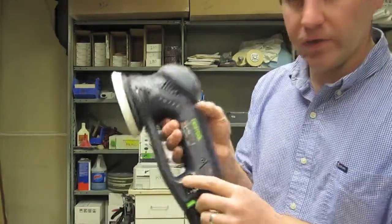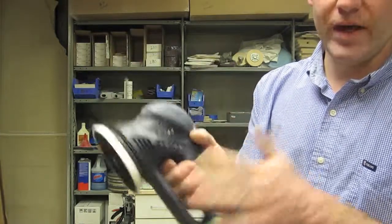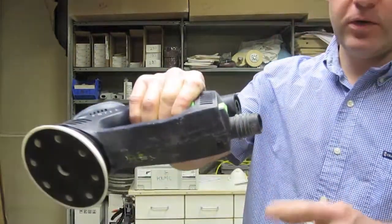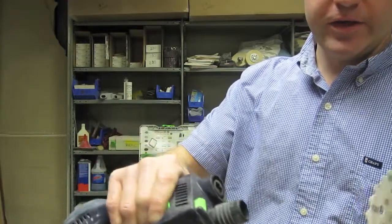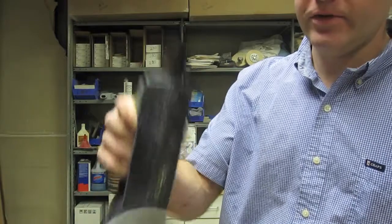The speed control is easy to reach without being in the way where it can be bumped and accidentally changed. The dust port is designed to grip Festool's vacuum. We use a different vacuum here, so we just have homemade adapters.